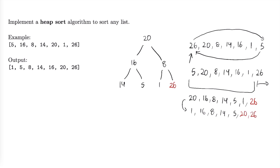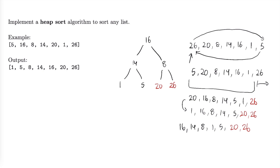We do the same steps here — we swap these two, so this became a 20 and this became a 1. Now we just sift down 1: 16 is the greatest child, so we'll move 1 down and keep 16. Then we swap 1 and 14. Now our list looks like this: 16, 14, 8, 1, 5, 20, and 26. Keep in mind that 20 and 26 are already in sorted order, so we don't have to consider these when heapifying our list later on.